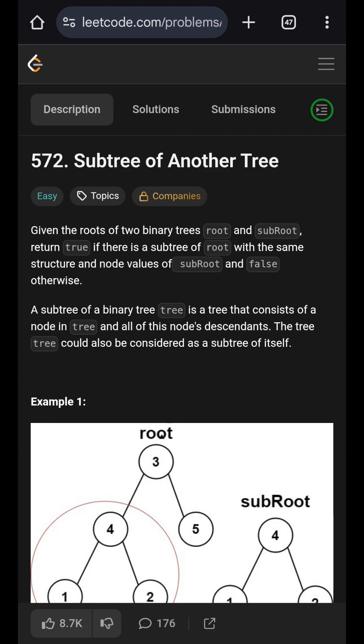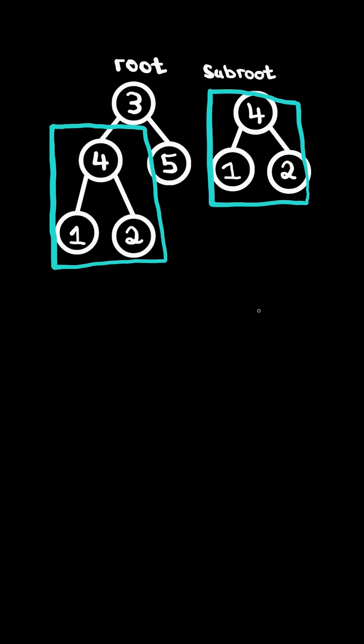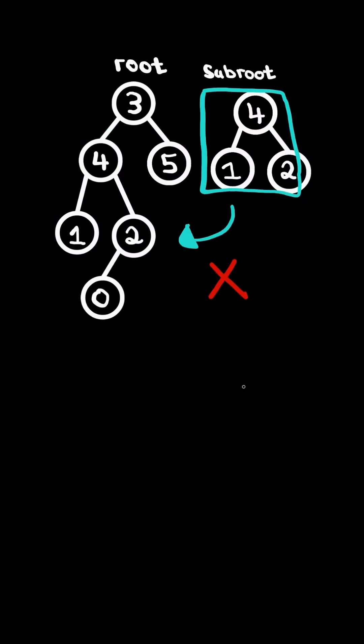Subtree of another tree. Given two binary trees, root and subroot, return true if there is a subtree of root with the same structure as the subroot. In this case, we return true. Consider if we add another node to the root tree — now the subroot is not a subtree in root, so we return false.